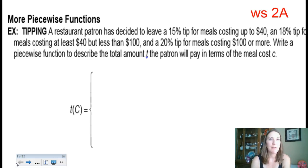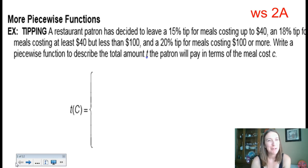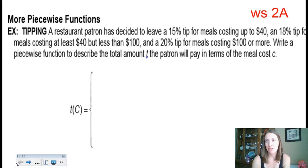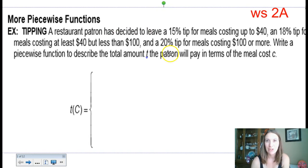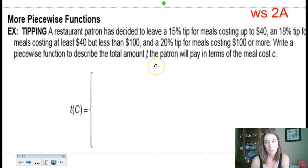The first question is about tipping. A restaurant patron has decided to leave a 15% tip for any meal that costs up to $40, an 18% tip for a meal that costs at least $40 but less than $100, and a 20% tip for meals that cost $100 or more. We're going to write a piecewise function called C of C, using C to represent the meal's cost as the independent variable. There are three different price points as far as tipping goes.